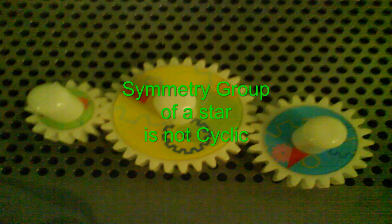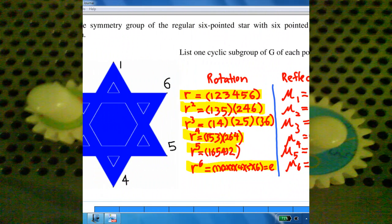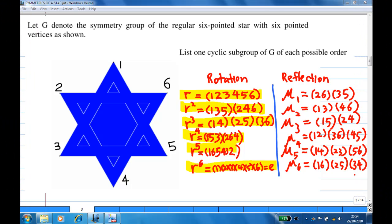Hi, for this recording, we are given a 6-pointed star with vertices 1, 2, 3, 4, 5, 6.